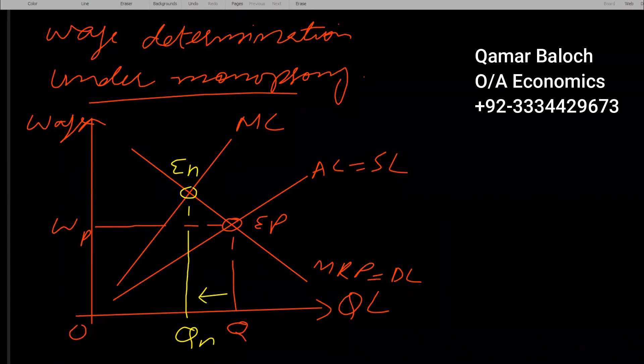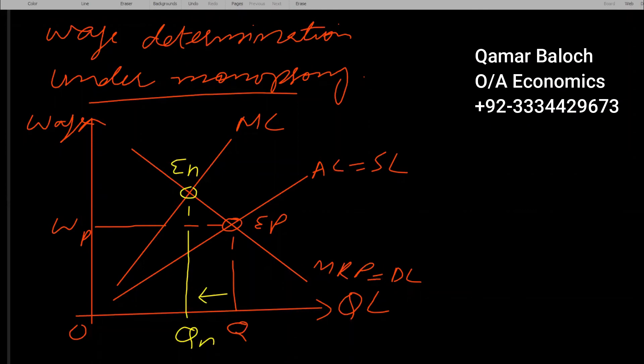But what wage rate will it pay? It will pay wage rate equal to wn. When we drop perpendicular from en to qn, then this perpendicular intersects supply of labor curve at point a, so monopsony employer will pay wage rate wn.